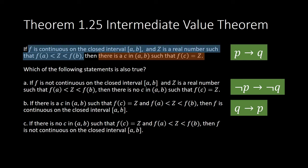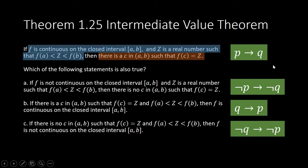Statement letter c is what we call the contrapositive. It's the contrapositive of the statement p implies q: not q. If there is no c in (a, b), then our function is not continuous. So which of the three statements is equivalent to our statement p implies q?